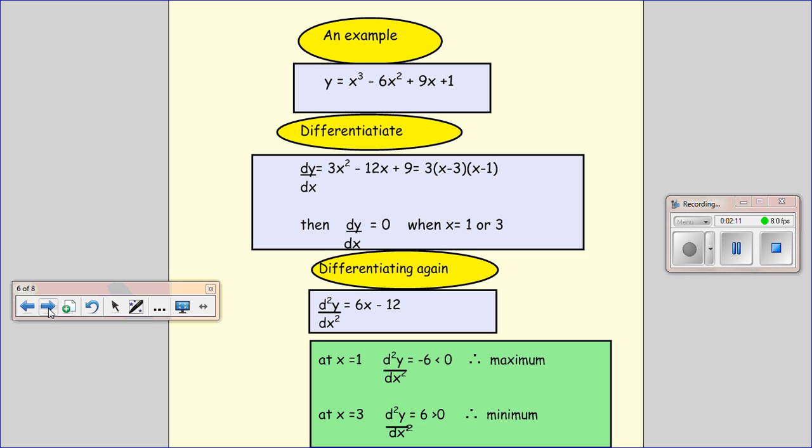So here's just a quick example. We're going to find the nature of the stationary points of this curve. So first of all, we take our curve, we differentiate it. Remember how we differentiate these? Multiply by the power, take one from the power. So this becomes 3x² minus 12x plus 9.